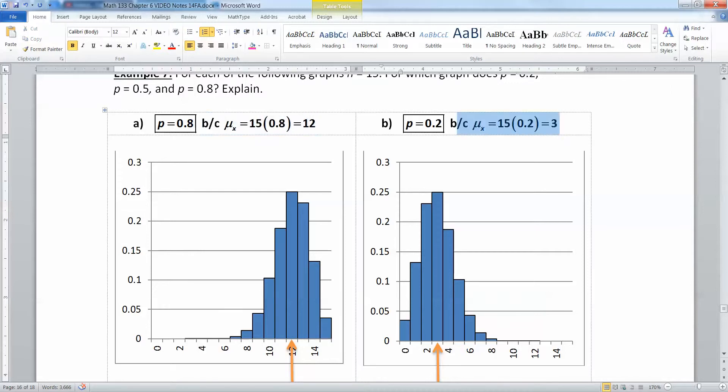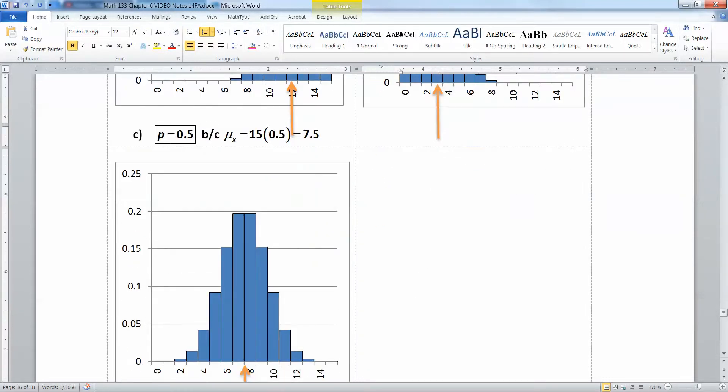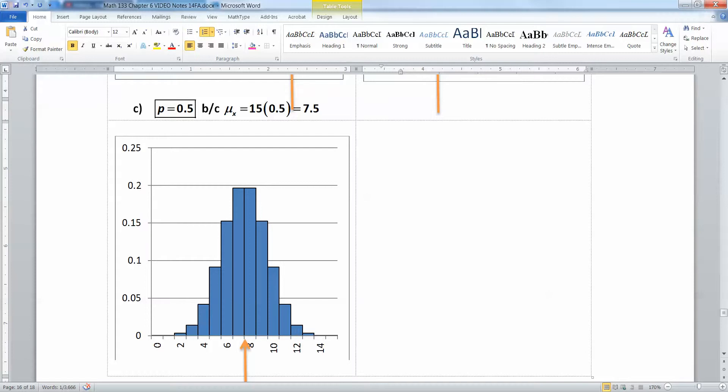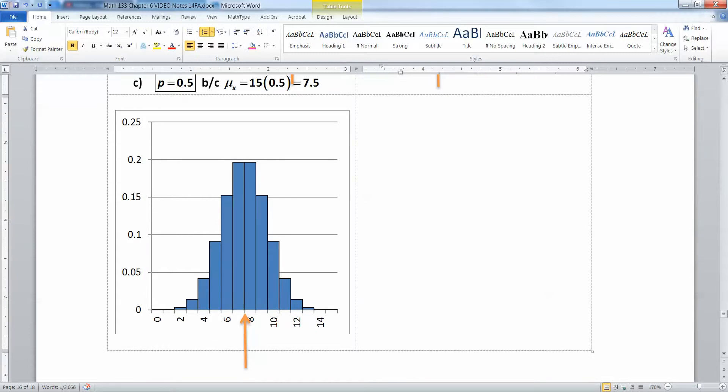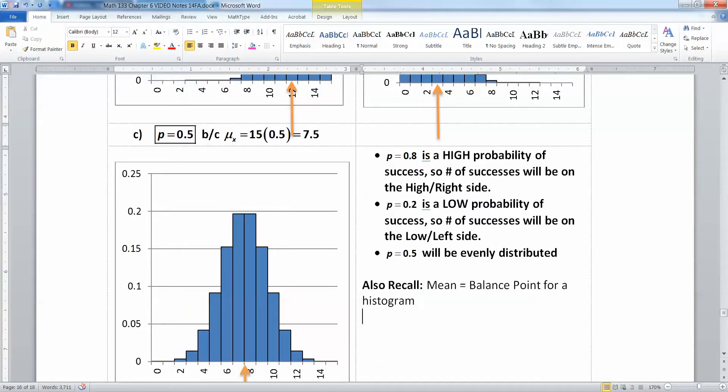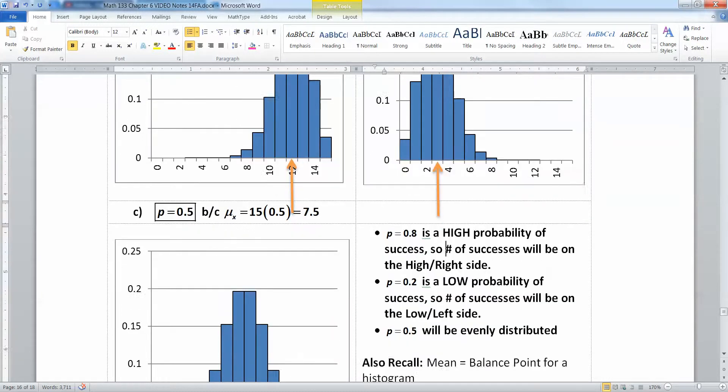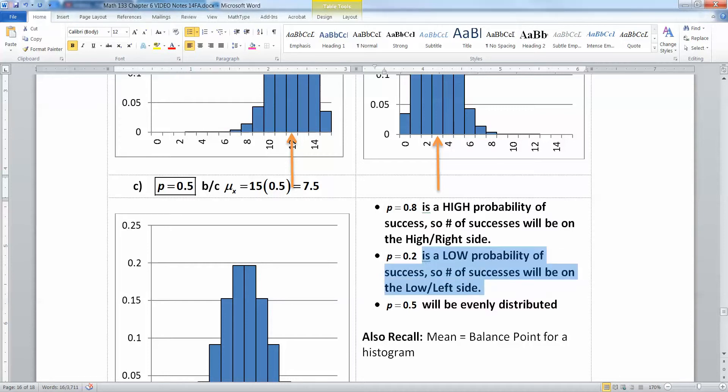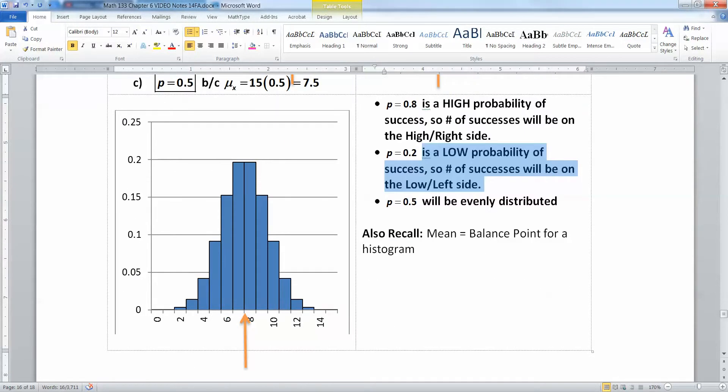This one has the chances of success on the low end, so that means you expect to be on the low side of successes. So over here at the zero to eight range, and this one's smack dab in the middle. So that's why you're evenly spread and you have a lot of successes on the low and the high end. So we have p equals 0.8 is a high probability of success, so the number of successes will be on the right side, the high side. P equals 0.2 is a low probability, so the successes will be over on the left side, the low side, and 0.5 will be evenly distributed. And don't forget that the mean is the balance point. So another way you can help yourself figure it out is by figuring out the mean and going from there.